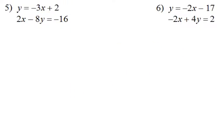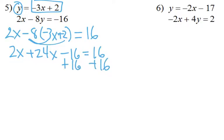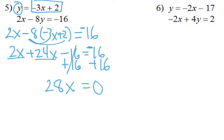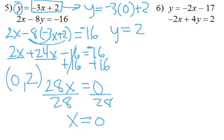On number 5, same idea. y is equal to that whole piece, so in my other equation I replace the y with that whole piece. We substitute it in, then simplify: negative 8 times negative 3 is positive 24x, negative 8 times positive 2 is negative 16. Add 16 to get that there, we get 32. 2x plus 24x gives us 28x. I made a mistake — that's supposed to be negative 16. That would make this actually 0. So x equals 0. Go back to the original equation knowing x is 0, and we get our answer of 0, positive 2. That's where they intersect.